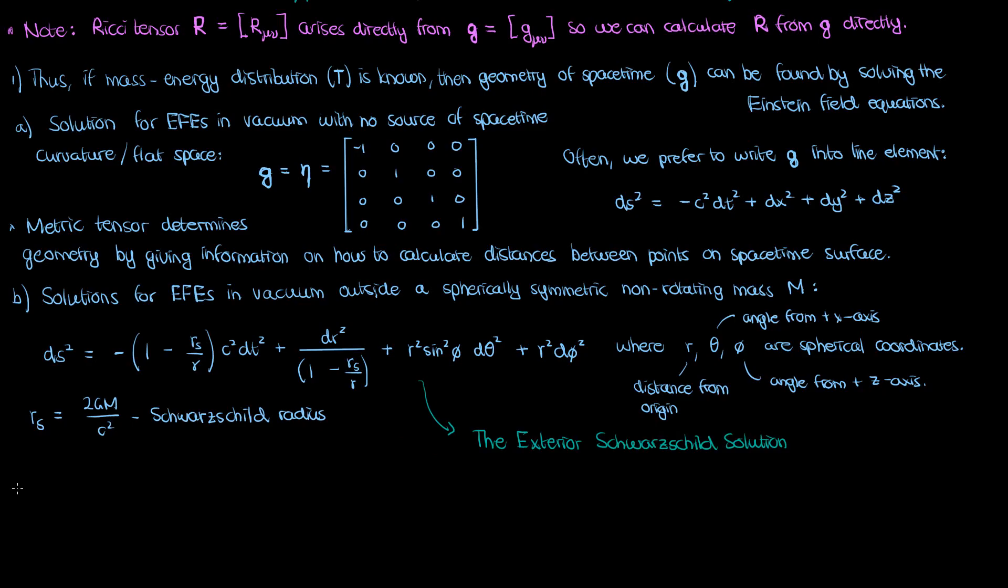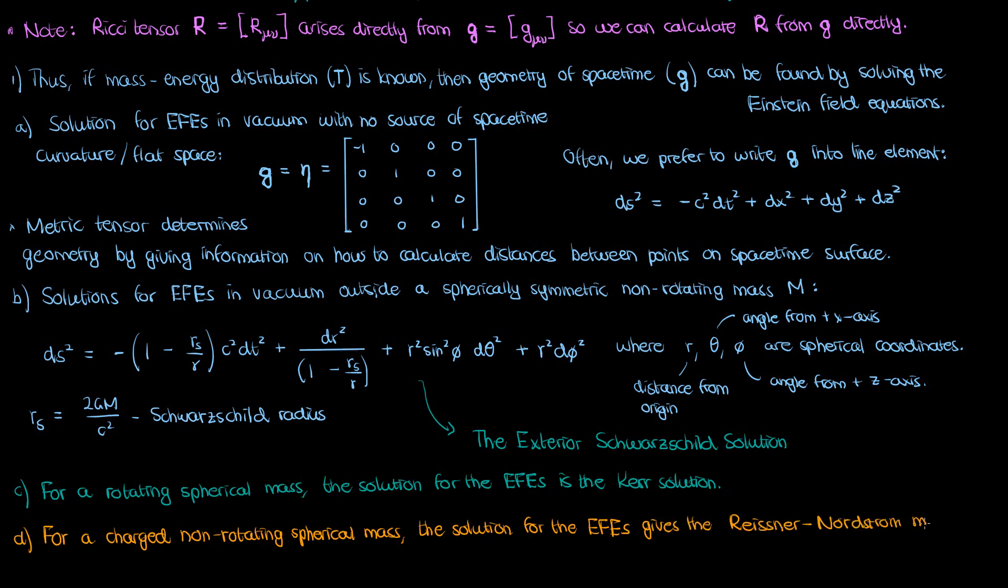Now, there are also metric tensor solutions for a bunch of other cases. One example is if you have a spherical mass, but this time that mass is rotating, you'd end up with a metric tensor that corresponds to the Kerr solution, the Kerr metric. For the case of a non-rotating but charged spherical mass, you end up with the Reissner-Nordstrom metric.